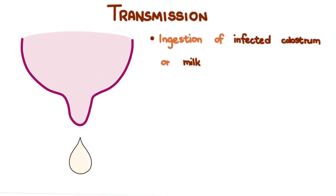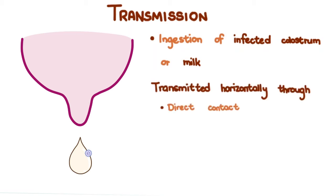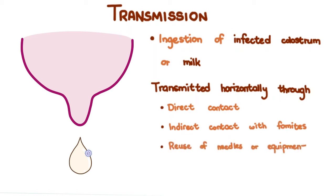Transmission: The caprine arthritis encephalitis virus is primarily spread through the ingestion of infected colostrum or milk. The virus hitches a ride inside a macrophage and is absorbed in the gut of the kid. The virus can also be transmitted horizontally through direct contact, indirect contact with fomites, and reuse of needles or other equipment contaminated with blood.